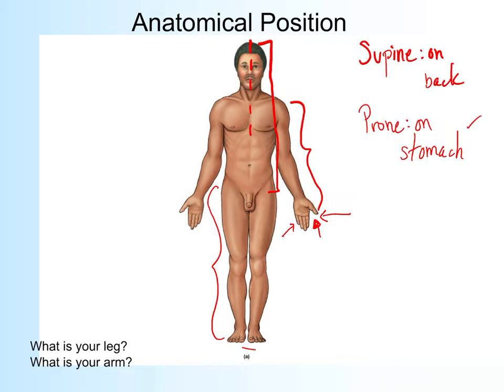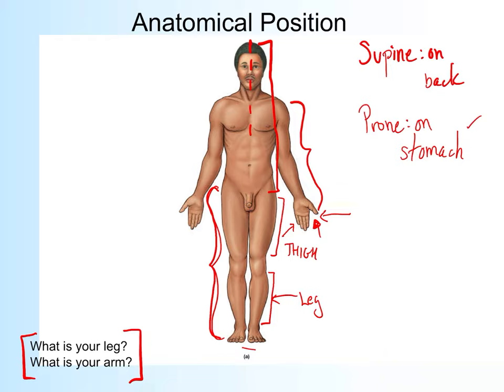Let me pause because I forgot to clarify what 'leg' and 'arm' mean in anatomy. In everyday language we say 'leg' for the whole lower limb, but in anatomy the leg is only from the knee down. From the knee to the hip is the thigh — different muscles move the thigh versus the leg. Similarly, the arm is technically only from the shoulder to the elbow. Below that is the forearm. Muscles that move the arm don't necessarily move the forearm.